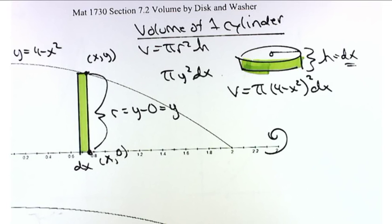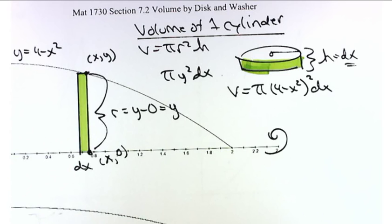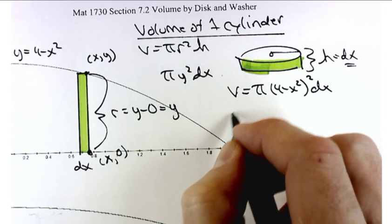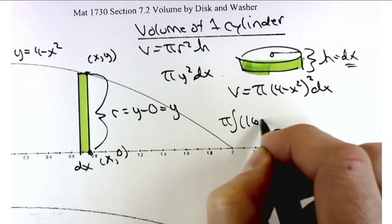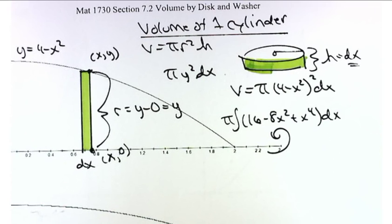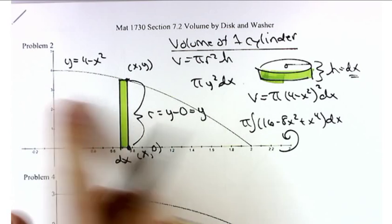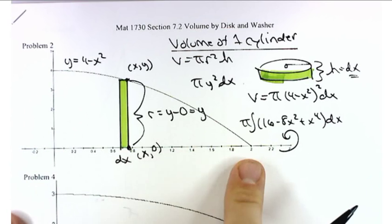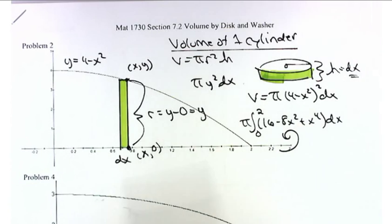We need to figure out the volume of all such cylinders. Rather than going through the full limit of Riemann sums, we'll write down the integral right away. Taking pi out front and squaring the binomial gives us 16 minus 8x squared plus x to the fourth, times DX. The limits of integration run from 0 to 2, since the slice can be taken anywhere along the x-axis between those values.